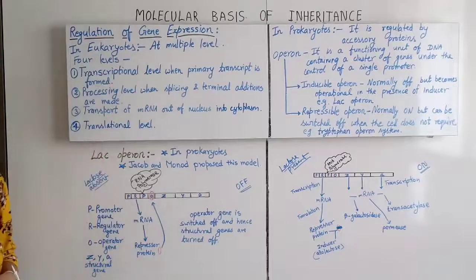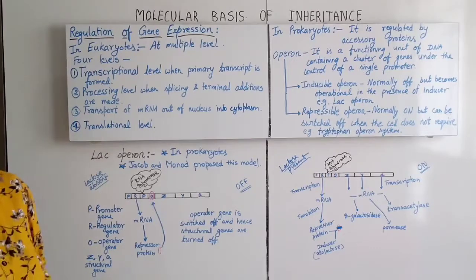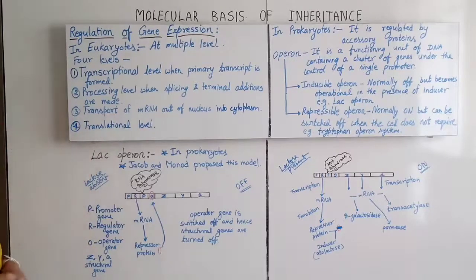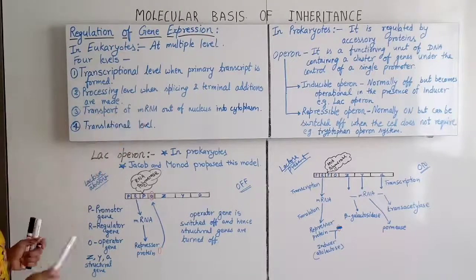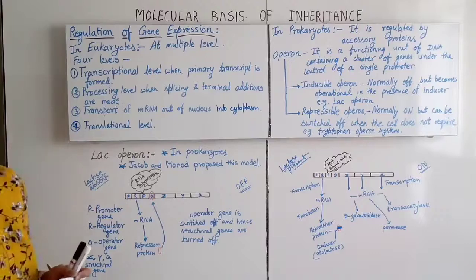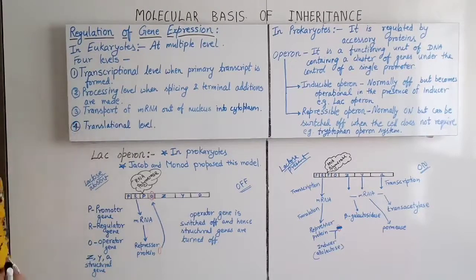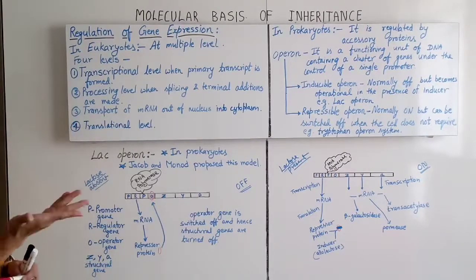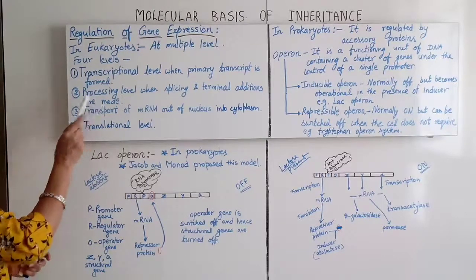In the case of eukaryotes, gene expression takes place at multiple levels. There are mainly four levels. The first one is the transcriptional level, when the primary transcript is formed. The second is the processing level, when splicing and terminal additions are made.